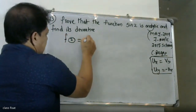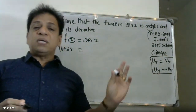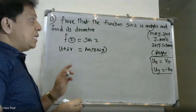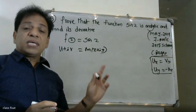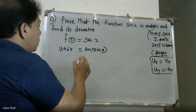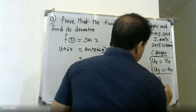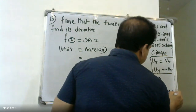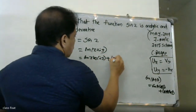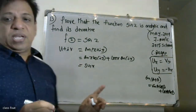We have f(z) equal to sin(z). Writing z as x plus iy, we expand using the formula sin(a+b) equals sin(a)cos(b) plus cos(a)sin(b). So sin(x plus iy) equals sin(x)cos(iy) plus cos(x)sin(iy).